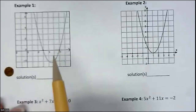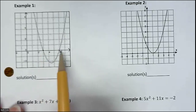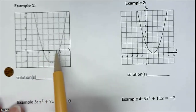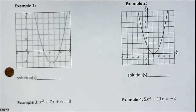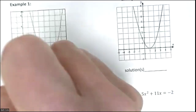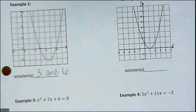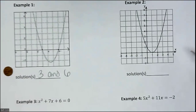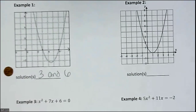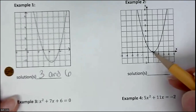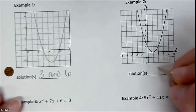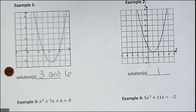Look at this first one. There are two x-intercepts. Now how about this one — this one only has one. You see that right there? One. That's it. Now if you're not given the graph, you would have to type it in using the Desmos calculator.